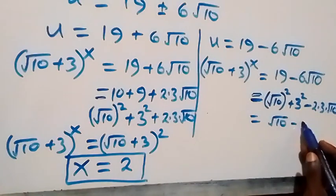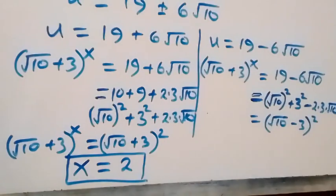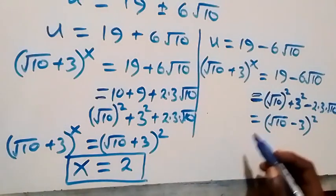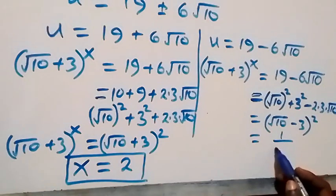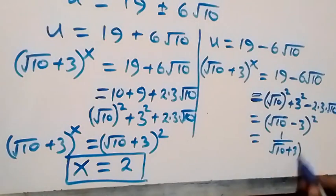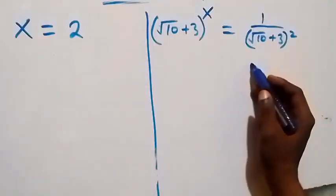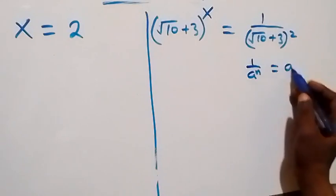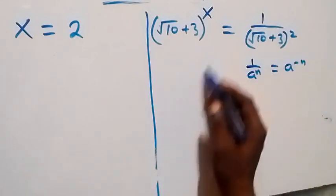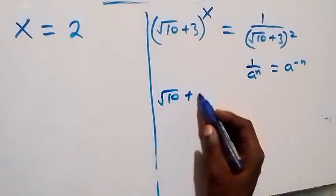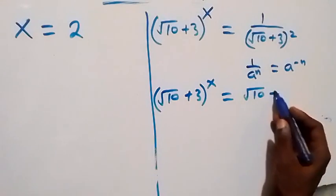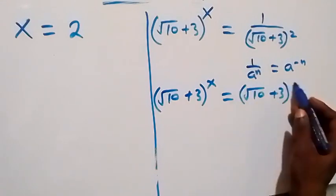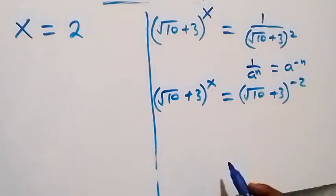Which can also be written as (root 10 minus 3) squared, and we should recall that this is also written as 1 over (root 10 plus 3) squared. From the rule that 1 over a raised to power n can be written as a raised to power minus n, this gives us (root 10 plus 3) raised to power x equals (root 10 plus 3) raised to power minus 2.